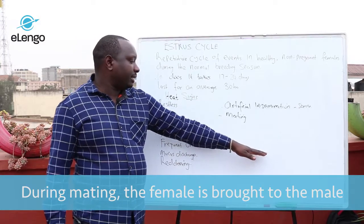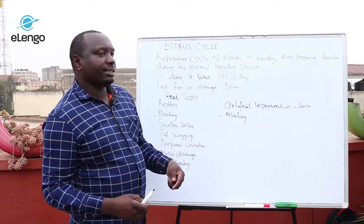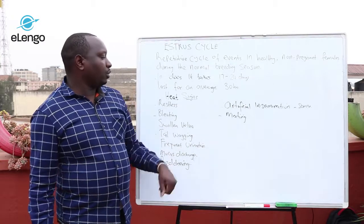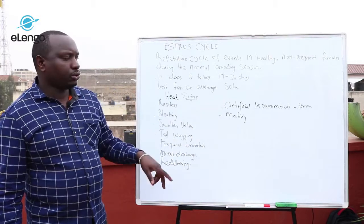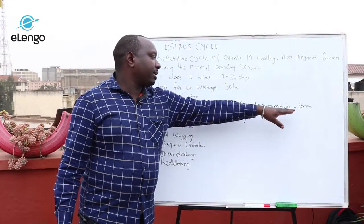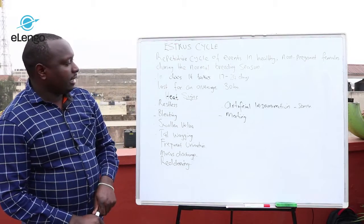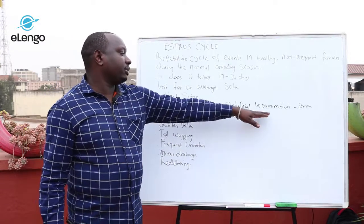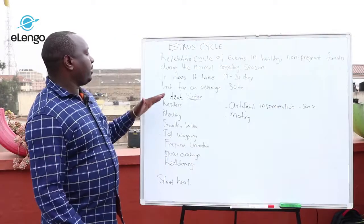When mating, the farmer should know the characteristics of the buck which is mating the doe. Similarly, in artificial insemination it is the responsibility of the farmer to know the characteristics of the semen he or she is receiving from the service provider. Artificial insemination is only done by trained personnel, especially veterinary officers.